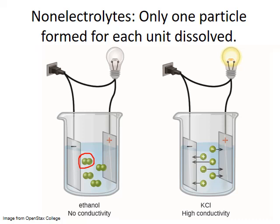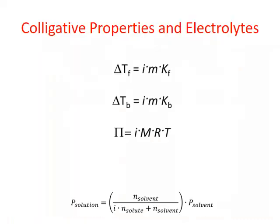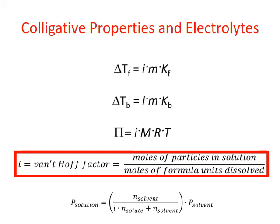Electrolytes must be capable of dissociating into charged ions in solution — that's how they carry a current. Generally, electrolytes can be recognized as soluble ionic compounds or acids and bases. To deal with the dissociation of ions in solution, we use a modified version of the colligative properties formulas when dealing with electrolyte solutes. To each formula, we add one more variable, I, known as the Van't Hoff factor — simply the ratio of moles of particles in solution over the moles of formula units dissolved. For any electrolyte, this value is greater than one.